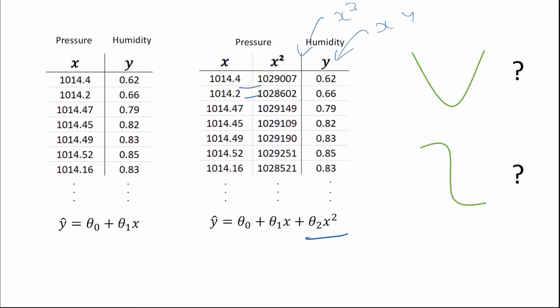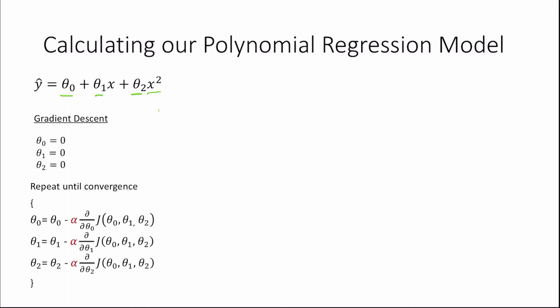So let's now see how the polynomial regression model is calculated. Calculating our polynomial regression model follows the exact same principles as multiple linear regression, but here we have x squared, which can just be treated as an extra variable. To calculate our model, we find the parameters theta zero, theta one, and theta two, which we do so applying the gradient descent algorithm.